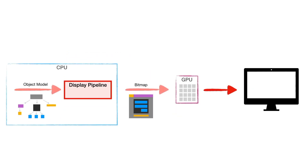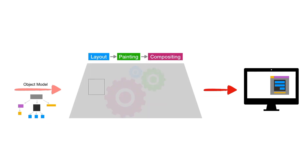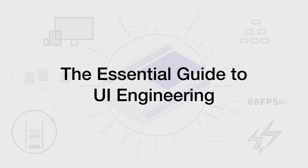All of that complexity that you see and learn in this course is nicely tucked away as you only see the rendered pixels on the screen. This is a fascinating journey for a UI as it starts its life in a simple textual description, moving up through all the stages, and finally lighting up the millions of pixels on your screen. So join me as we take a look under the hood in this first part of the Essential Guide to UI Engineering.